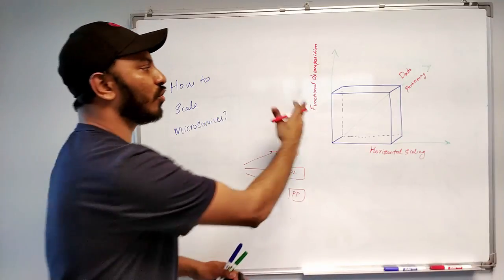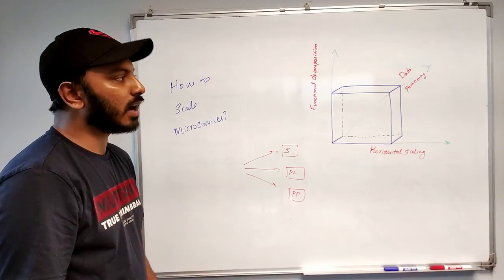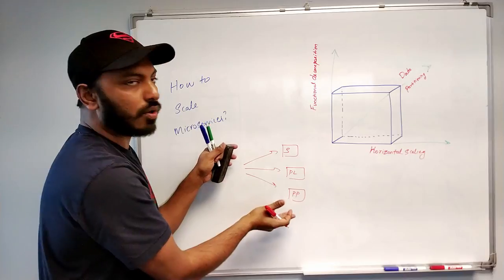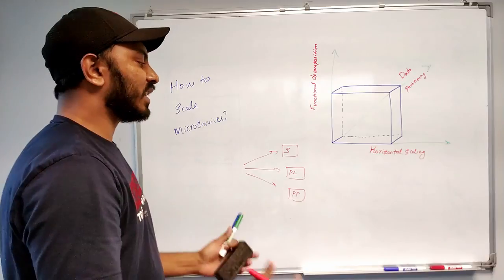And obviously you can't just use only one technique and then keep scaling out. You will be ending up using combination of the techniques. So you scale by functional decomposition and also you can scale this using horizontal scaling again.